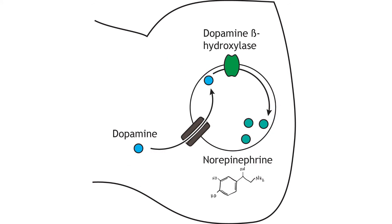In neurons that release norepinephrine, which is another catecholamine transmitter, once dopamine is packaged into the synaptic vesicles, a membrane-bound enzyme called dopamine beta-hydroxylase converts dopamine into norepinephrine. Therefore, unlike the other small molecule neurotransmitters, norepinephrine is synthesized within the vesicles, not in the cytoplasm. Like dopamine, the rate-limiting step of this synthesis pathway is the activity of tyrosine hydroxylase.